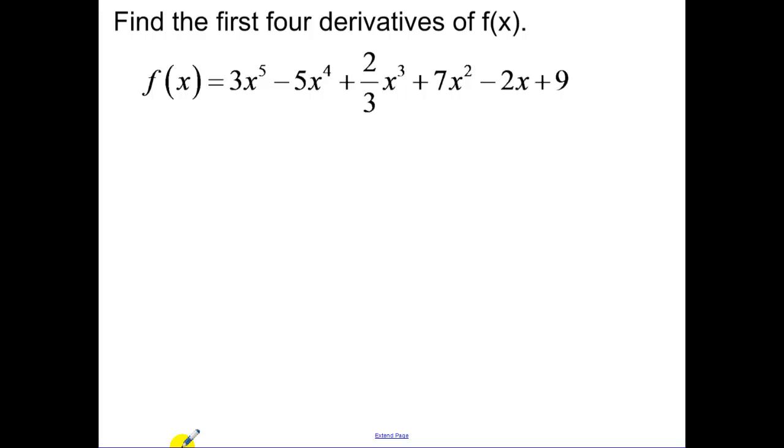Okay, find the first four derivatives, so f prime of x, 15x to the fourth, minus 20x to the third, bring the 3 down, 3 times 2/3 is 2x squared. Now I take my second derivative.